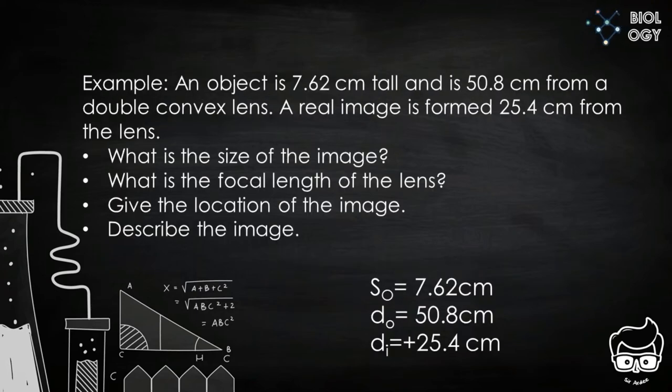For example, an object is 7.62 cm tall and is 50.8 cm from a double convex lens. A real image is formed 25.4 cm from the lens. What is the size of the image? What is the focal length of the lens? Give the location of the image and describe the image. We have given that S sub O equals 7.62 cm, D sub O equals 50.8 cm, D sub I equals positive 25.4 cm.